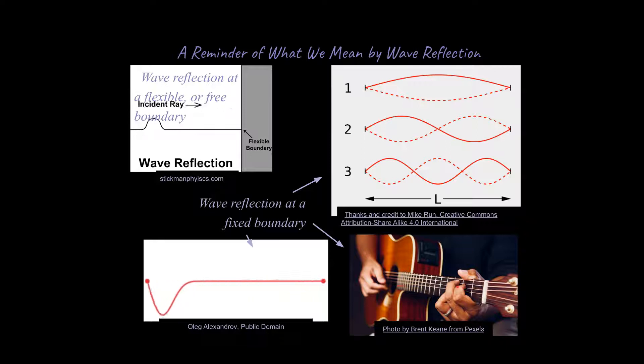When the player pushes down on the strings, what's happening is he's shortening the length of the string that is vibrating. This is the vibrating part of the string right here. But this actually does mean though that we have a fixed position on both ends of the string.